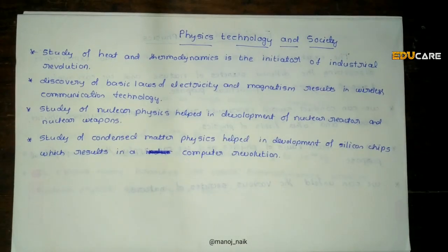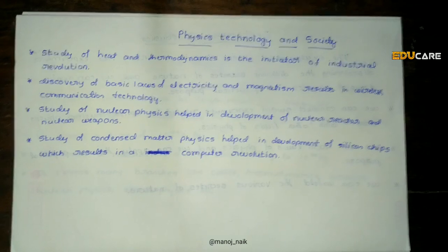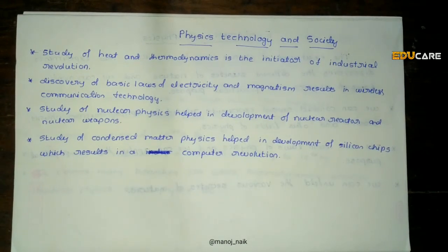Condensed matter physics is a branch of physics. The study of condensed matter physics helped in the development of silicon chips, which resulted in the computer revolution. The construction of satellites helped in communication, weather forecasting, and geophysical survey.